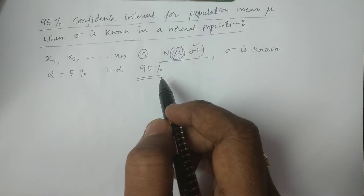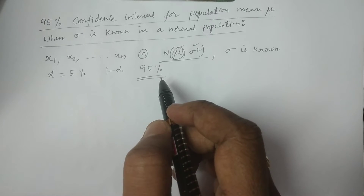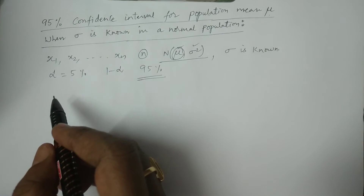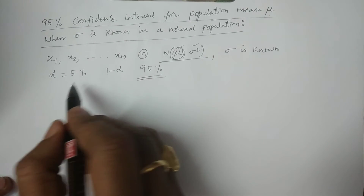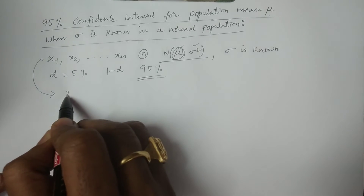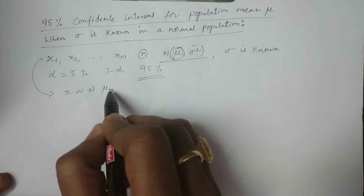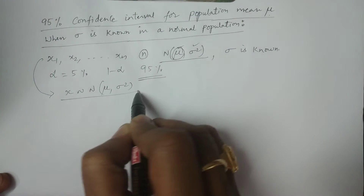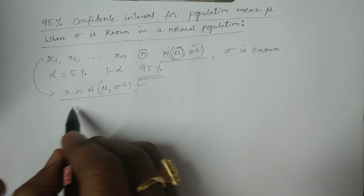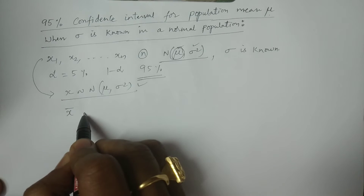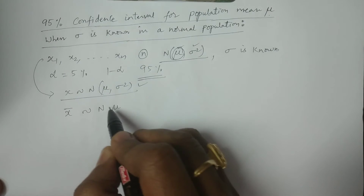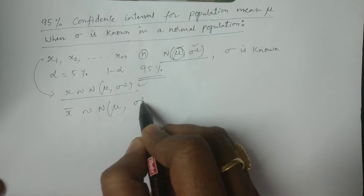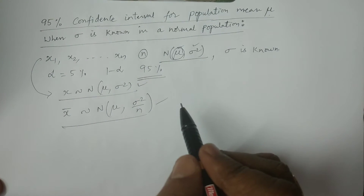Now, 1 minus alpha is 95%, or 0.95. We are calculating 95% confidence intervals. We consider that x follows a normal distribution with mean mu and variance sigma square. Now, the distribution of x̄ is also following a normal distribution with mean mu and variance sigma square by n. This is the distribution of x̄.